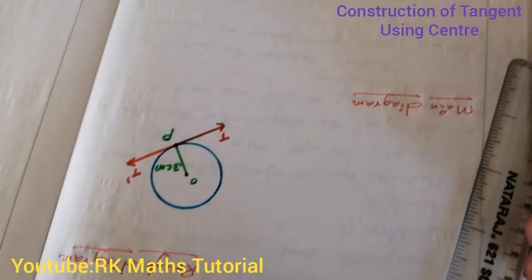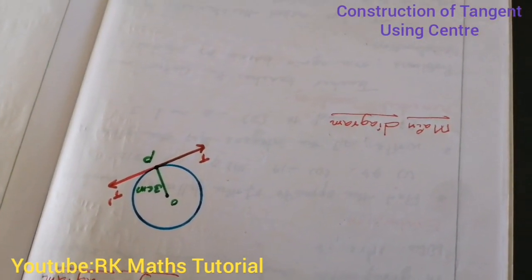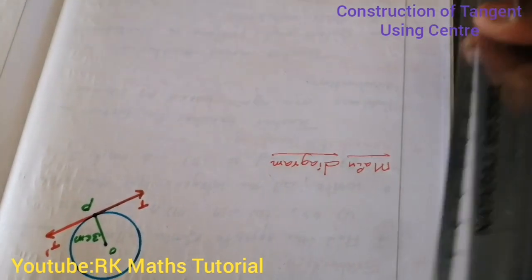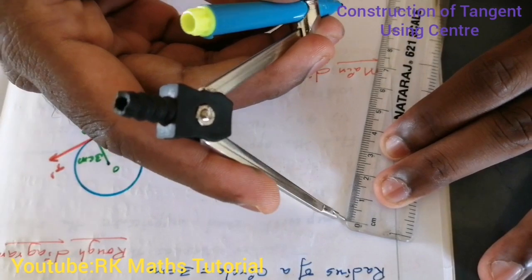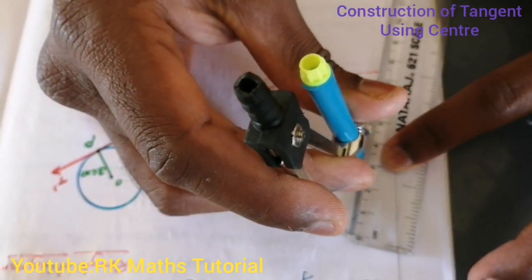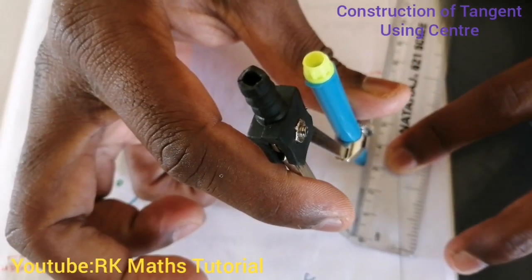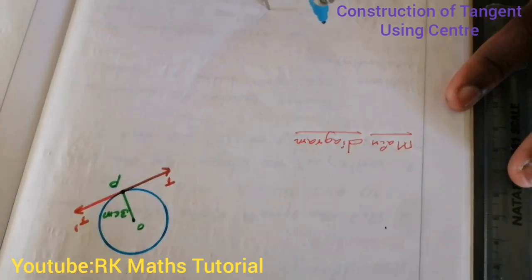Now this is the main diagram. So first, we are going to draw 3 centimeters. So, 3 centimeters. Okay, we are going to draw 3 centimeters. First, we draw a circle.